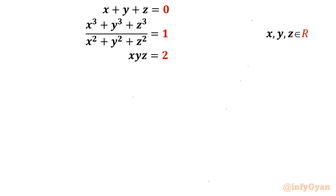The given equations are: x plus y plus z equal to 0; the second equation is x³ plus y³ plus z³ over x² plus y² plus z² equal to 1; and the third equation is xyz equal to 2. x, y, z are real numbers, and we have to find them.